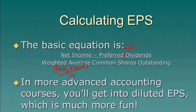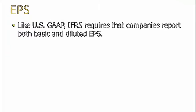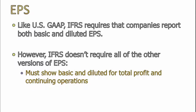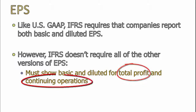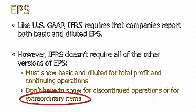We're also not going to worry about diluted earnings per share right now. Diluted EPS simply asks: what if everybody who had the right to buy stock bought it today — what would earnings per share look like? We'll leave that for a more advanced class. Under IFRS, earnings per share is pretty similar to US GAAP. The main difference is you don't need as many versions. You still show basic and diluted for both total profit and continuing operations, but you don't need to show discontinued operations or extraordinary items since extraordinary items aren't allowed under IFRS.